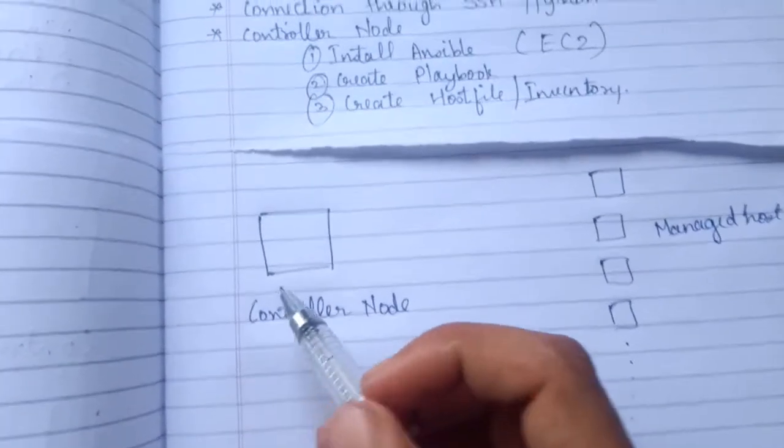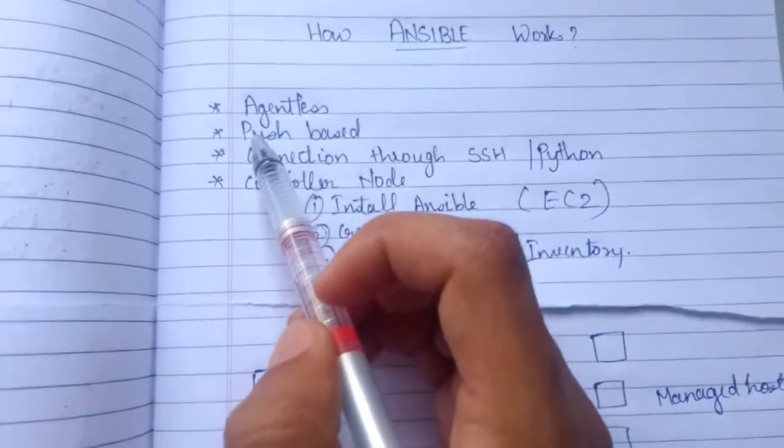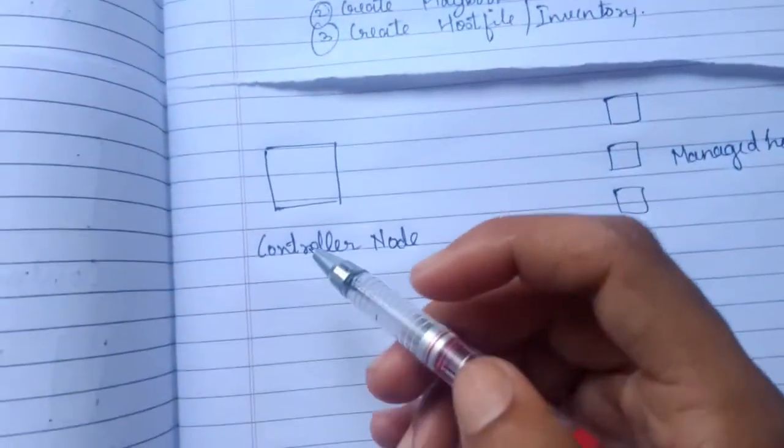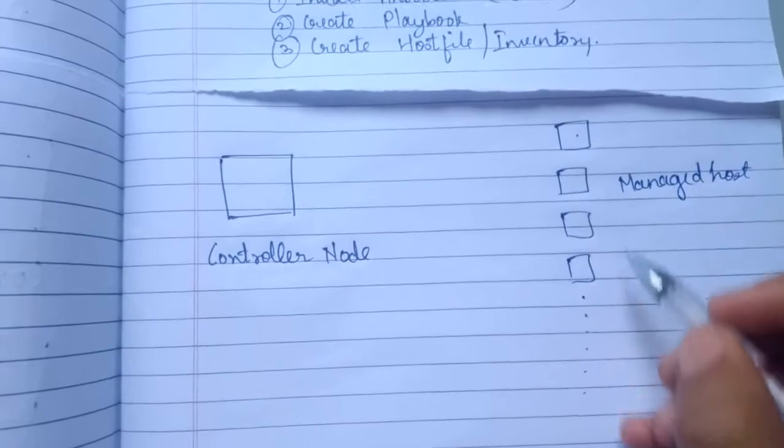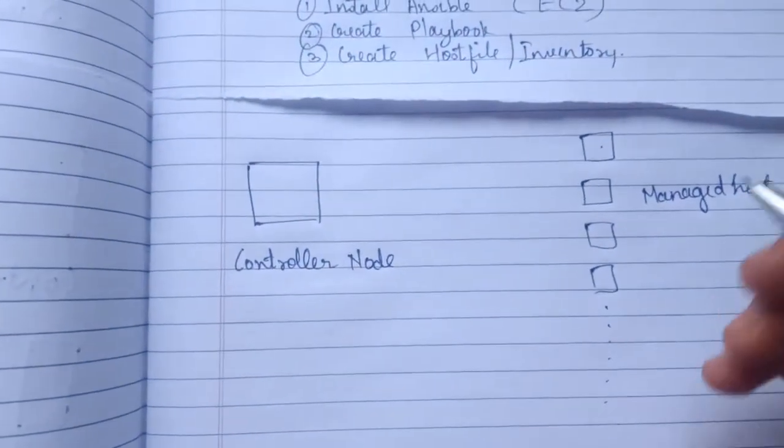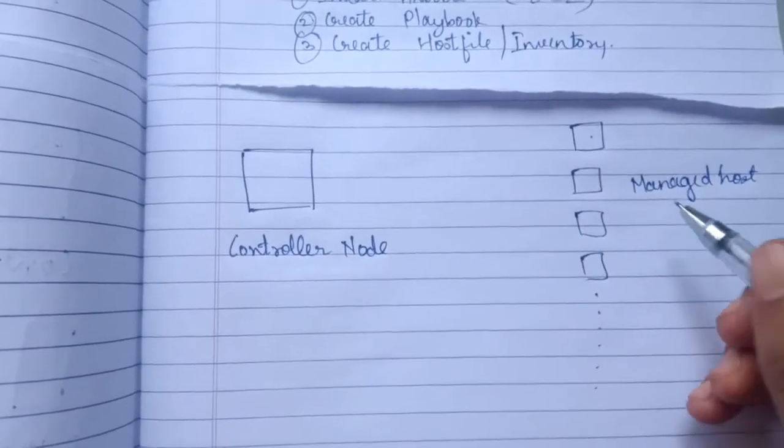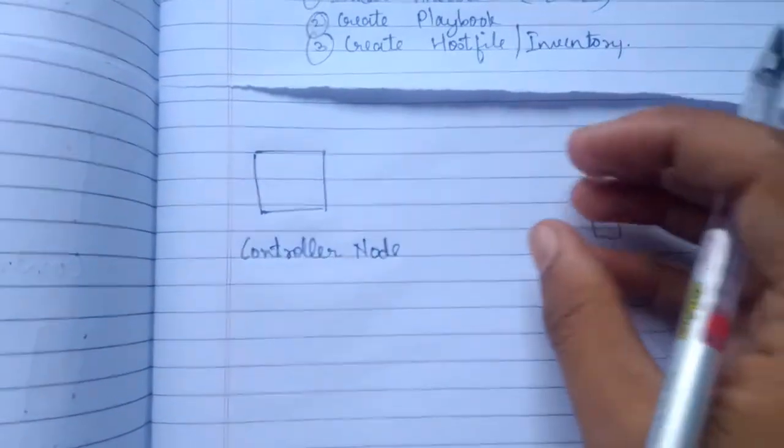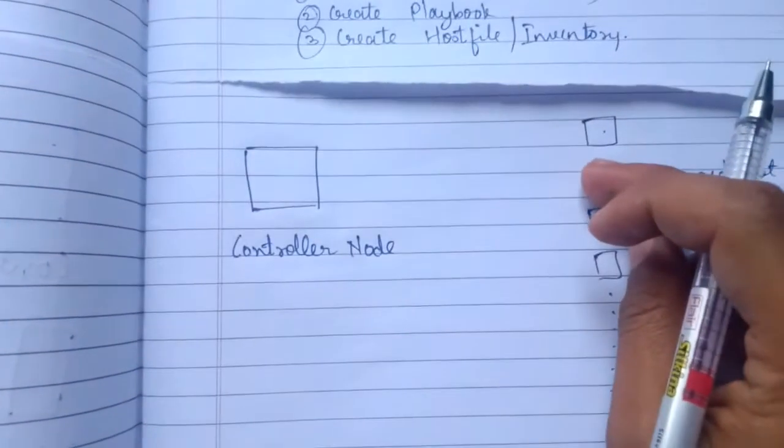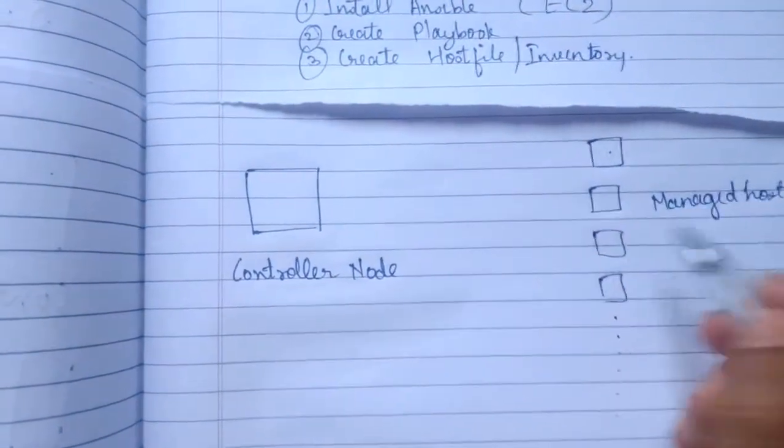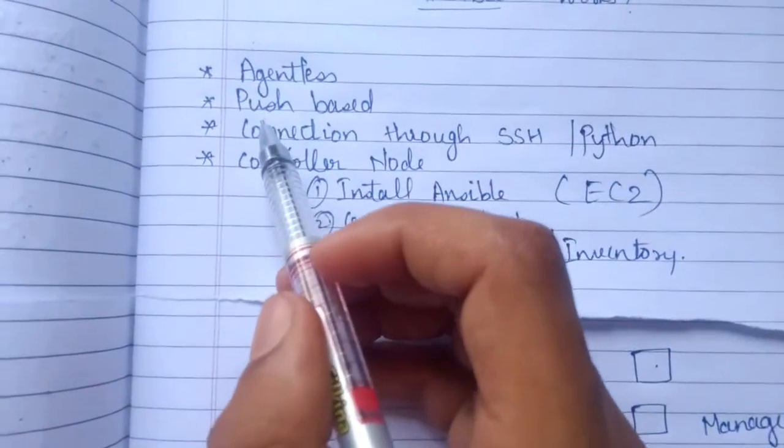Let's start with the theory. The first one is it is agentless. What do you mean by agentless? You don't have to install anything on the managed host. Unlike Chef and Puppet, in Chef and Puppet you have to install agent so they can pull things from the controller node. So this is agentless and Ansible is also push-based mechanism.